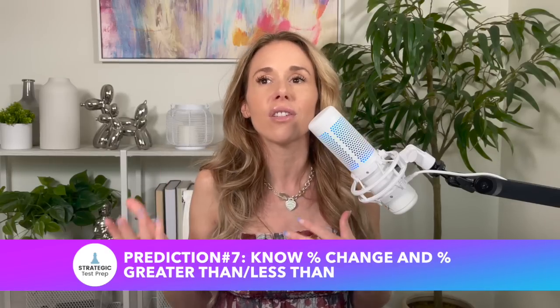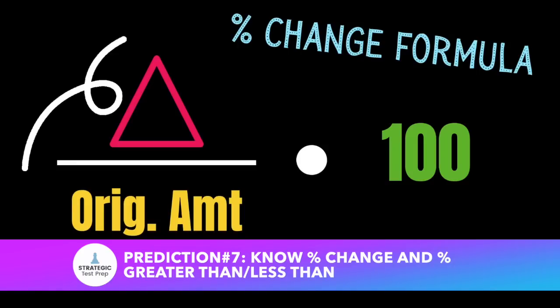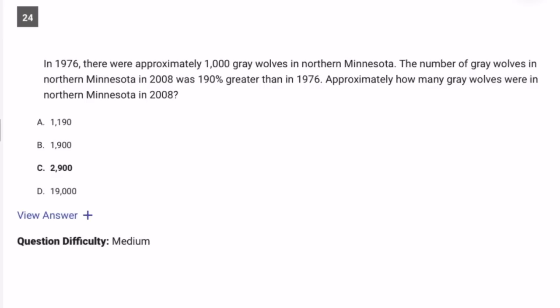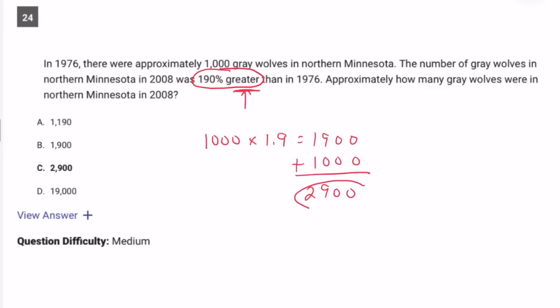Usually you just need to know the percent change formula — the change divided by the original amount times 100. What they started doing on the May test was saying something like 'it's 190% greater, so what is the new amount?' Because of the word 'greater,' you're not finding 190% of the number — a lot of students multiplied 1,000 by 1.9 and got 1,900. But since it's 190% greater, you have to add 190% of the original amount to the original amount, so the answer was actually 2,900, not 1,900.